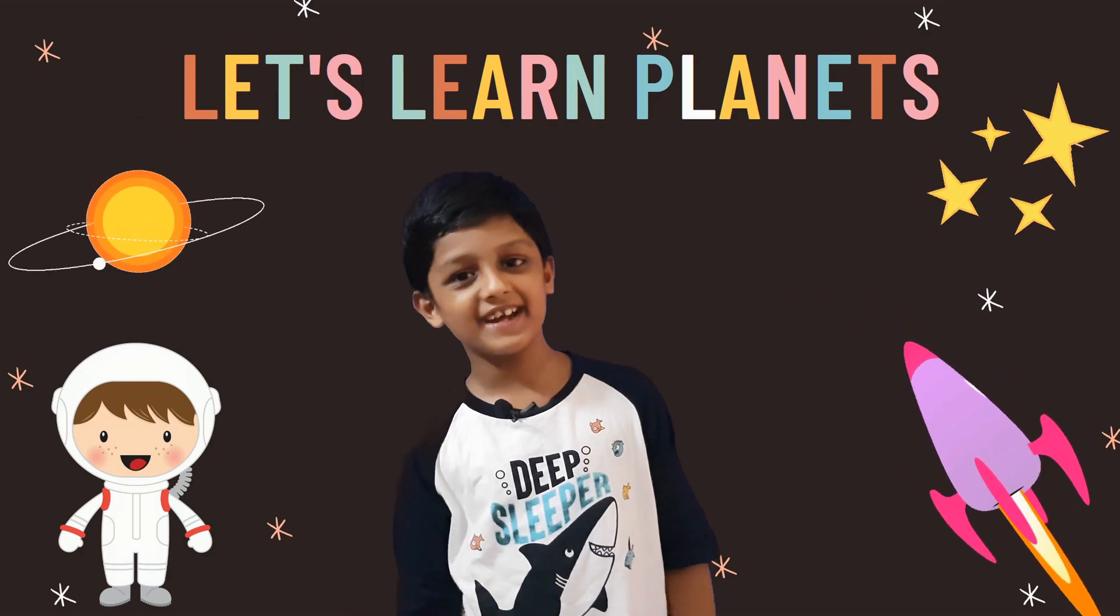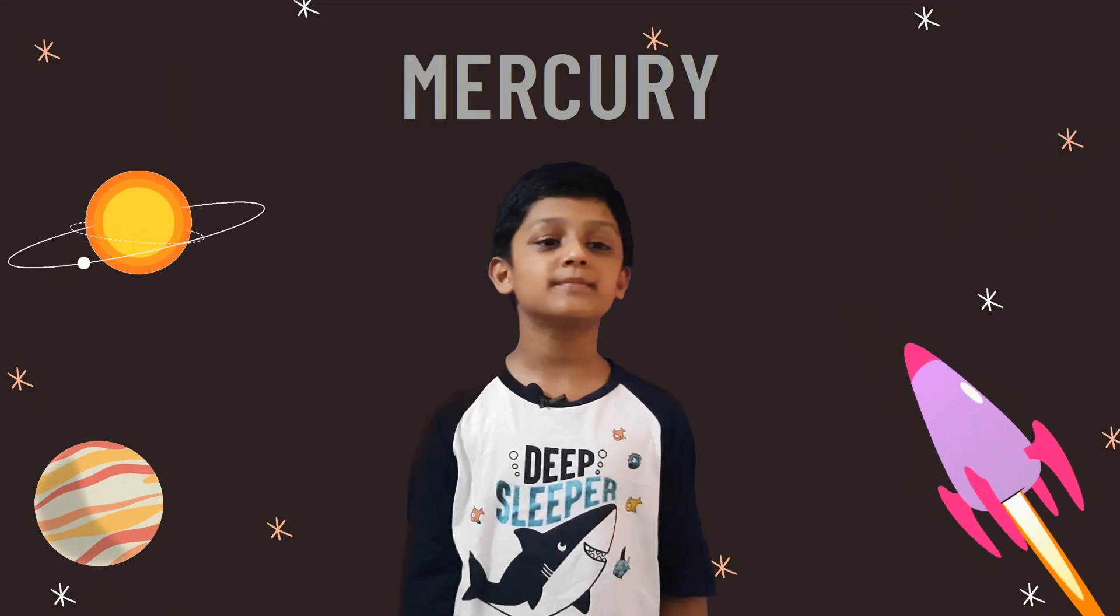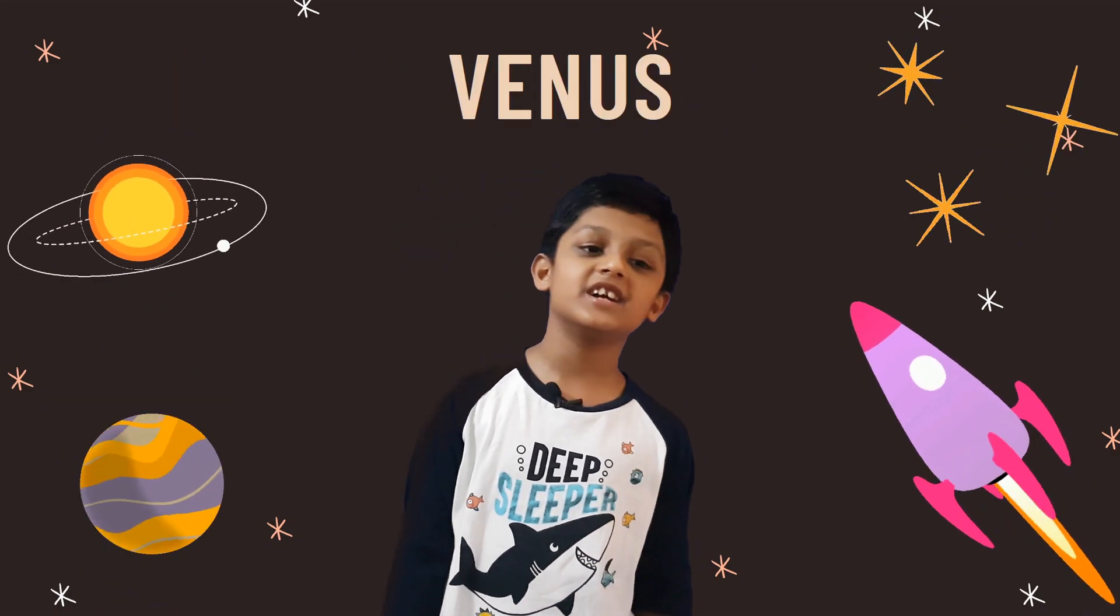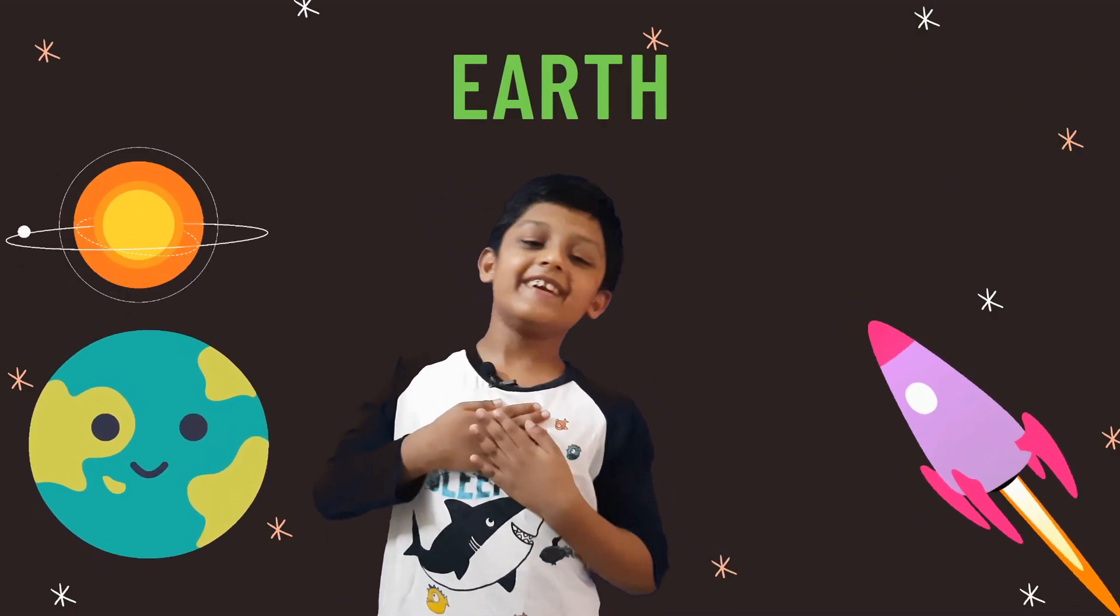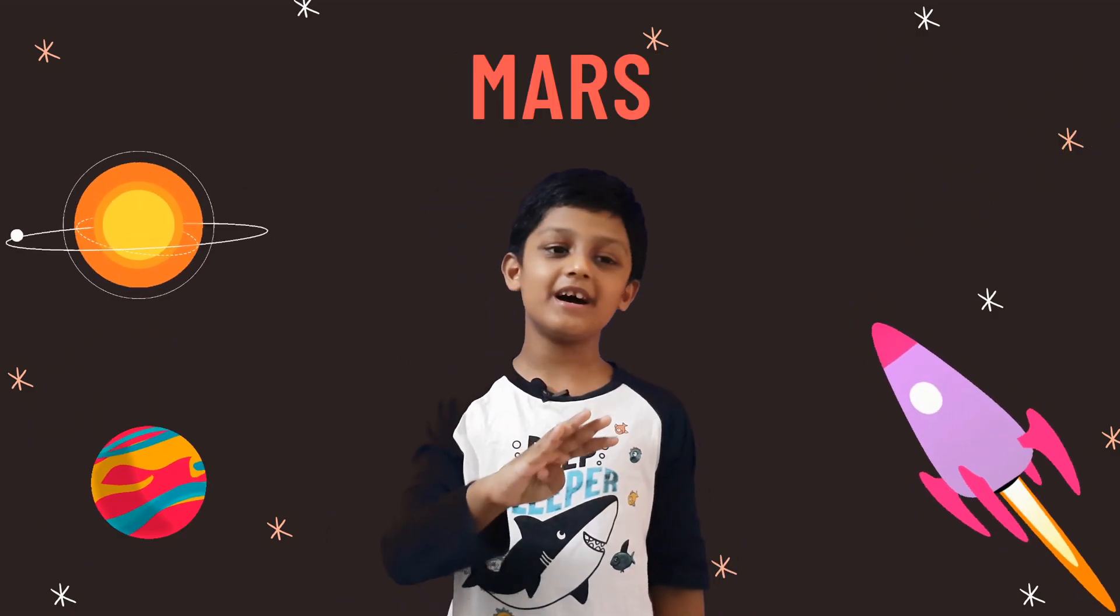moons and stars and all. Mercury is the smallest one, Venus is a shining star. Earth is the planet we live on and the fourth one is called Mars.